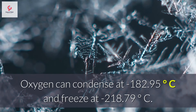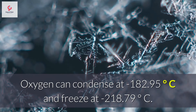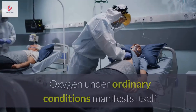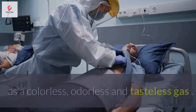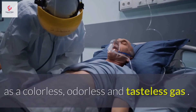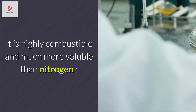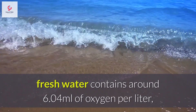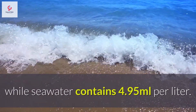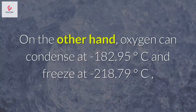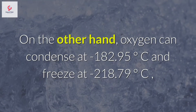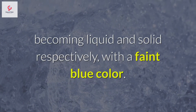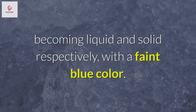Physical properties of oxygen. Under ordinary conditions, oxygen manifests itself as a colourless, odourless, and tasteless gas. It is highly combustible and much more soluble than nitrogen. Fresh water contains around 6.04 millilitres of oxygen per litre, while seawater contains 4.95 millilitres per litre. Oxygen can condense at minus 182.95 degrees Celsius and freeze at minus 218.79 degrees Celsius, becoming liquid and solid respectively, with a faint blue colour.